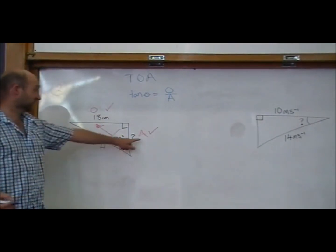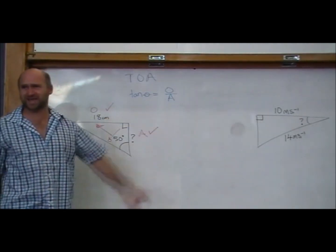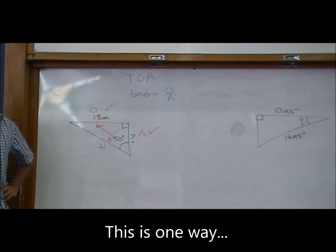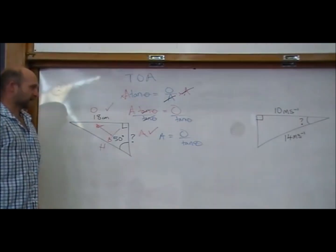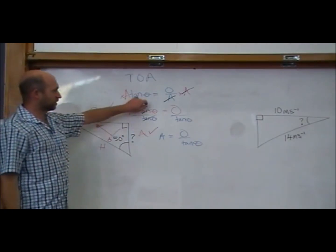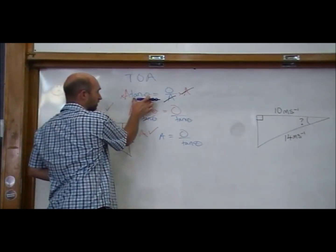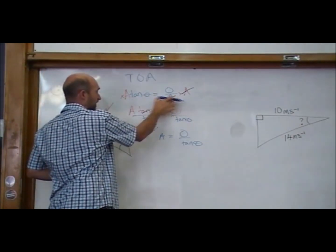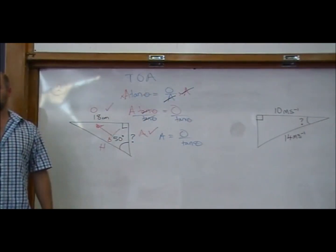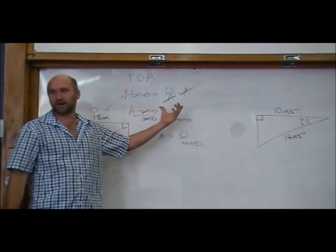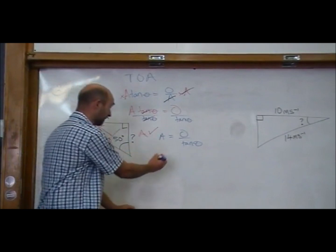We're trying to find the adjacent in this case. And so we need to, how do we rearrange for A? A is O over tan theta. If you look at where we started with, tan theta is O over A. All we've done is swap the place of the tan theta and the A. You see how we've just swapped them over? Drop and swap. When you've got fraction equals a number, you can do that drop and swap.